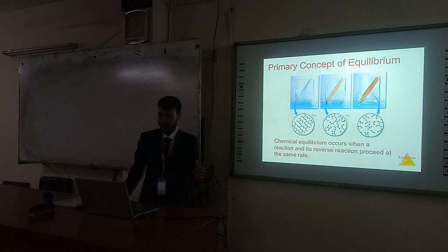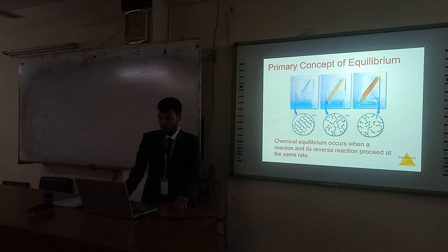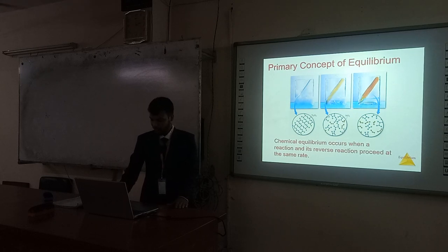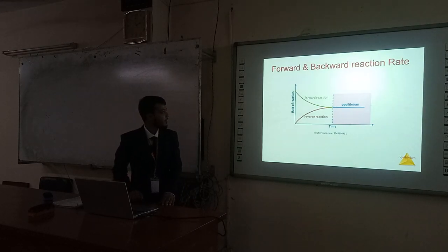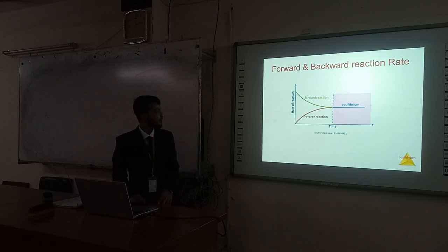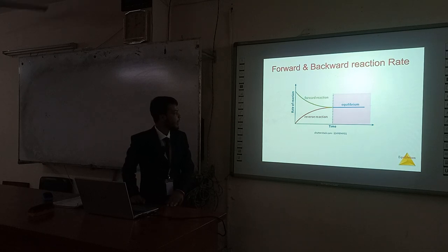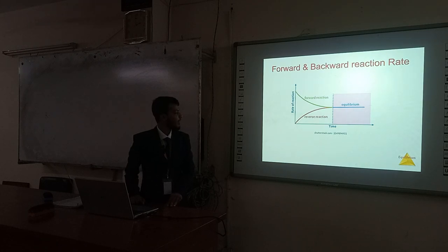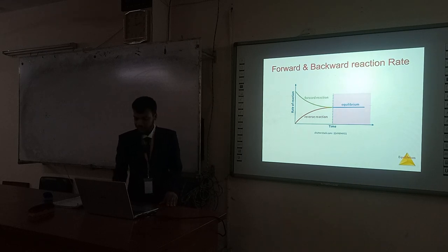My first topic is the Primary Concept of Equilibrium. Chemical equilibrium occurs when a reaction and its reverse reaction proceed at the same time. Look at the picture. The picture indicates two states: the reaction state and the equilibrium state. The upper line indicates the forward reaction and the lower line indicates the reverse reaction. The circle and the colored square indicate the equilibrium state.